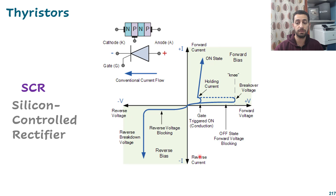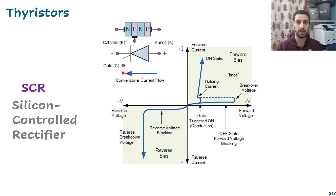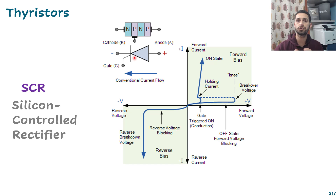This is the IV curve for the thyristor. By simple words, it is a diode, but it will not conduct current from the anode to cathode until I provide a pulse at the gate. If I turn on the thyristor by providing that turn-on voltage, it will flow current from anode to cathode. But if I turn off the gate pulse or release the pulse, it will keep the thyristor on. So the thyristor is a semi-controlled device - I can turn it on by providing a pulse, but I can't turn it off by removing that pulse.